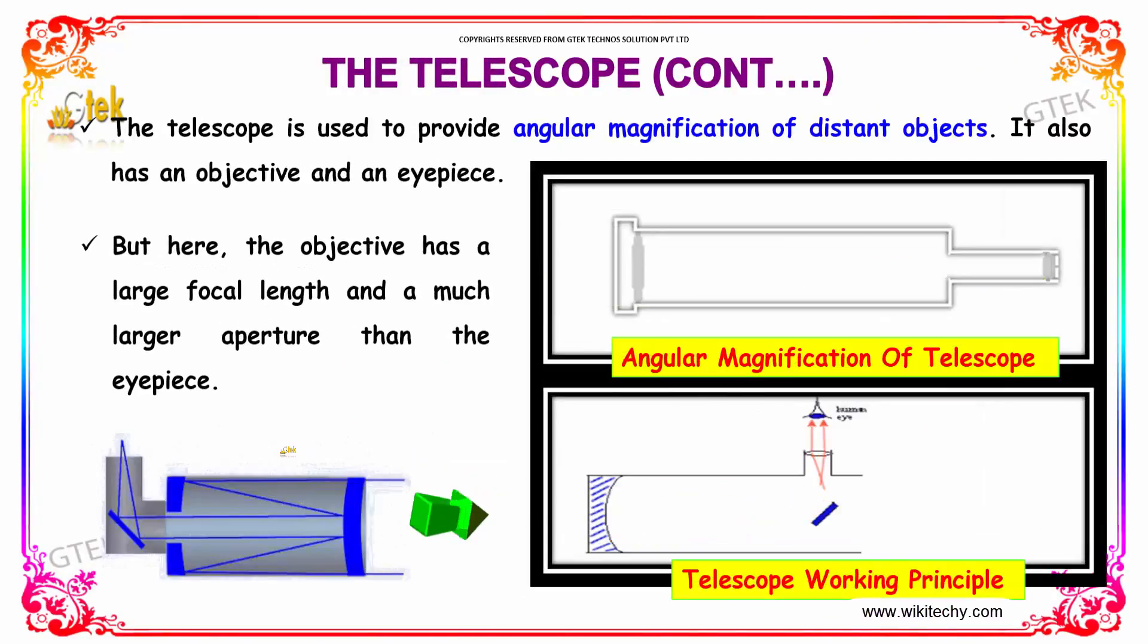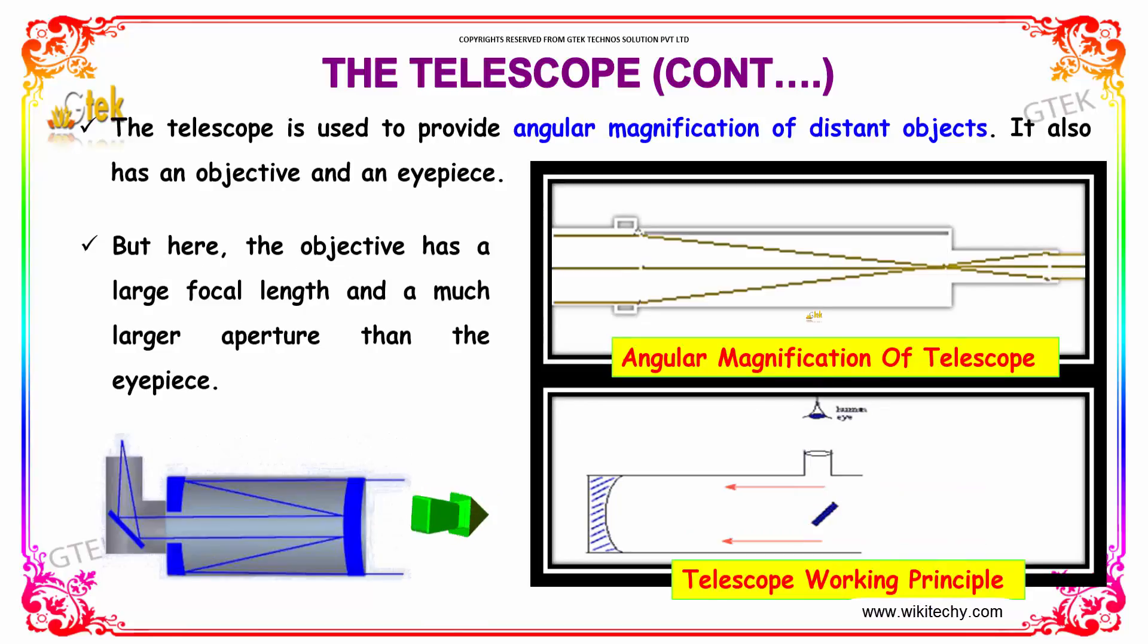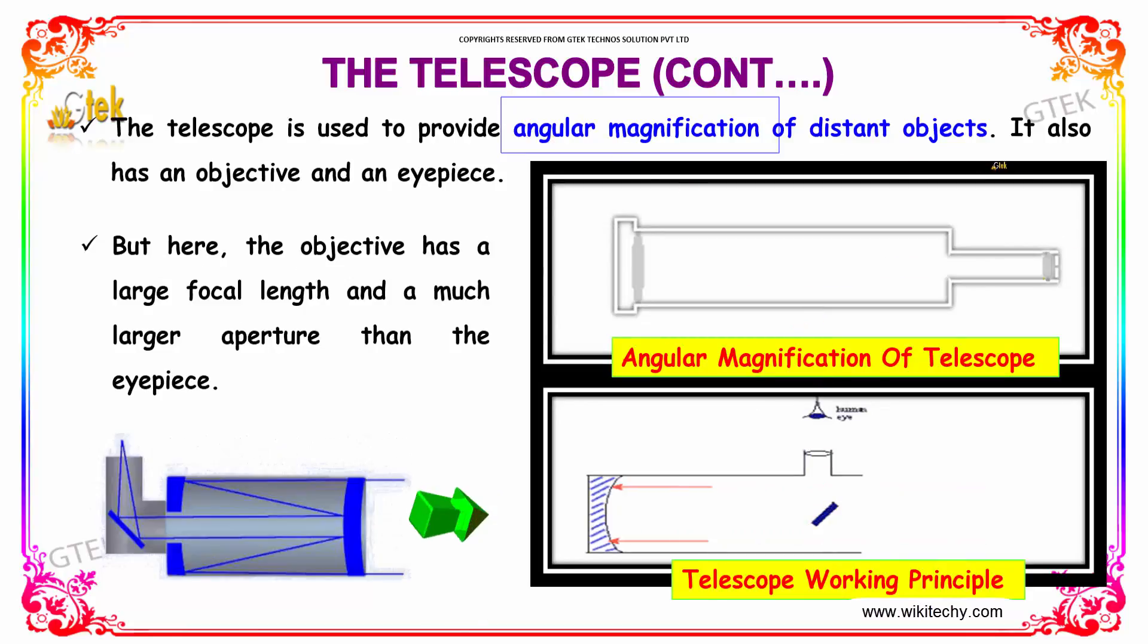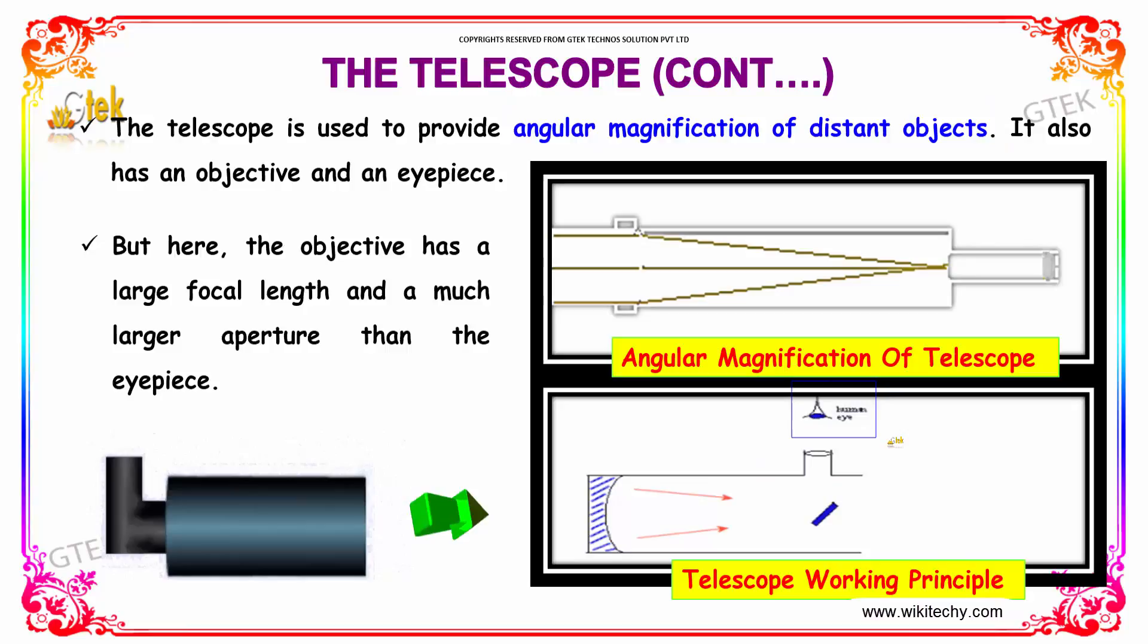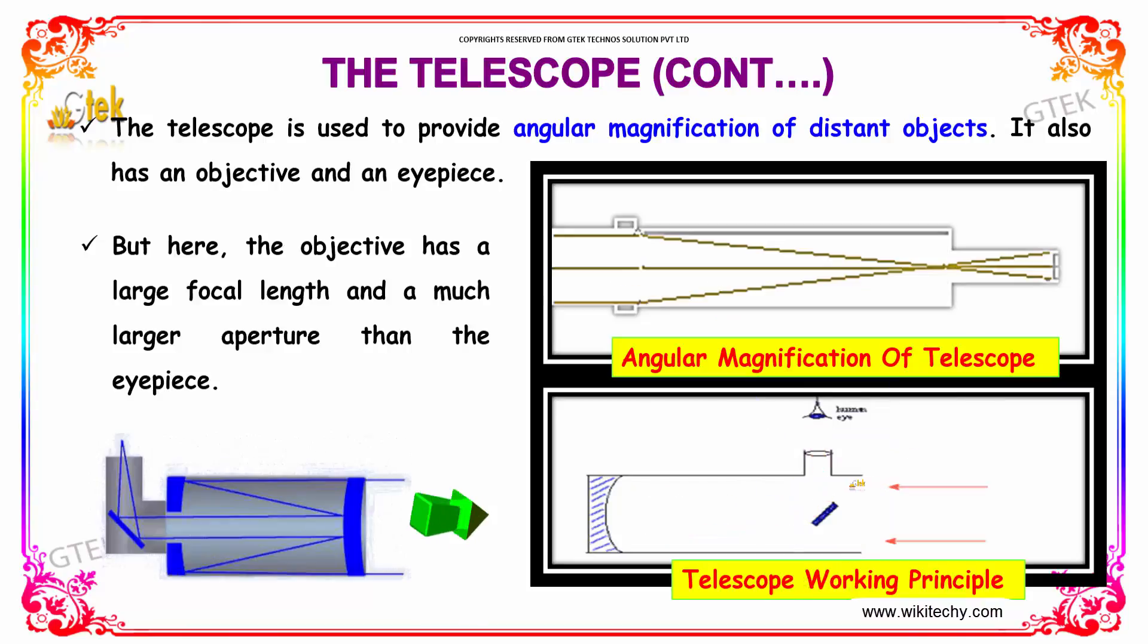The telescope is used to provide angular magnification of distant objects. It also has an objective and an eyepiece. This is the eyepiece and this one is the objective which is focused.